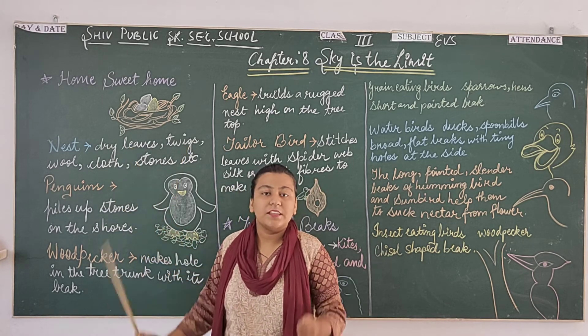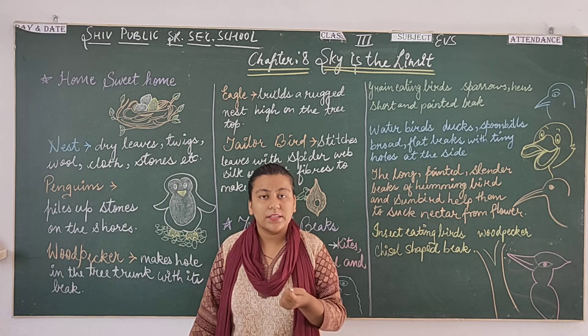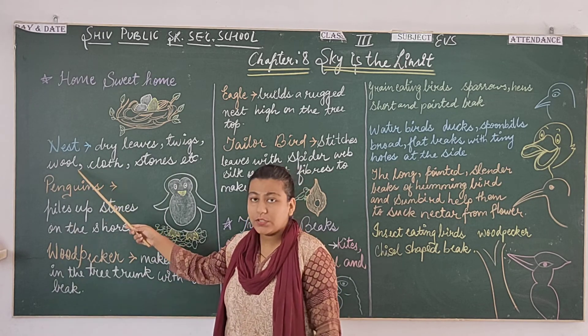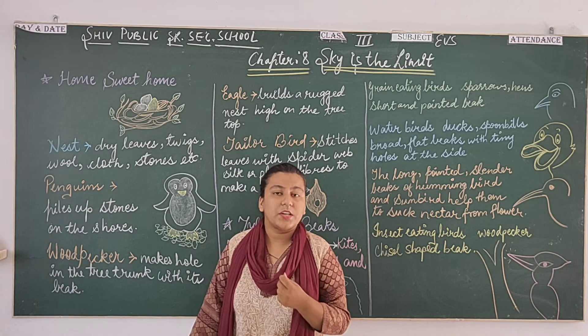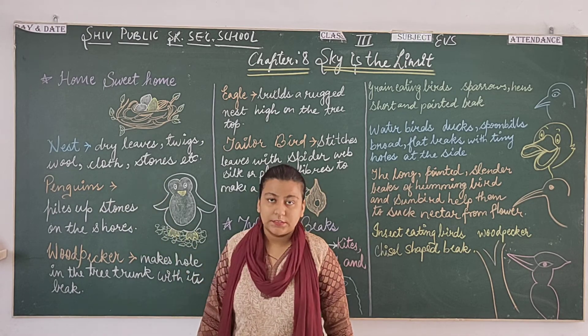Twigs are used to build the nest. There are also sweet grass, wool, clothes, and stones used in nest building.